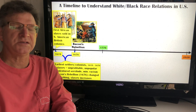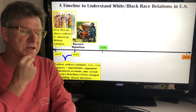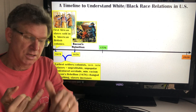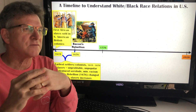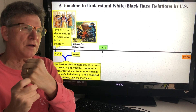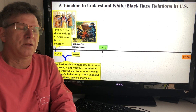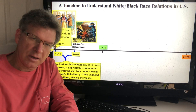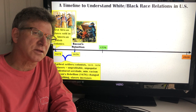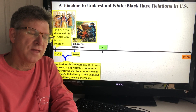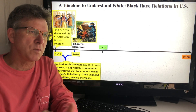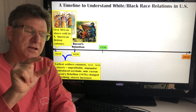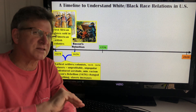All of that changes in 1676 with Bacon's Rebellion — a rebellion formed amongst white indentured servants and black slaves who joined together in revolution. The white people at the time freaked out and squashed the rebellion. It became very clear that indentured servitude was a bigger danger than they thought. It's at this point in 1676 that indentured servitude starts to decline and slavery starts to increase.